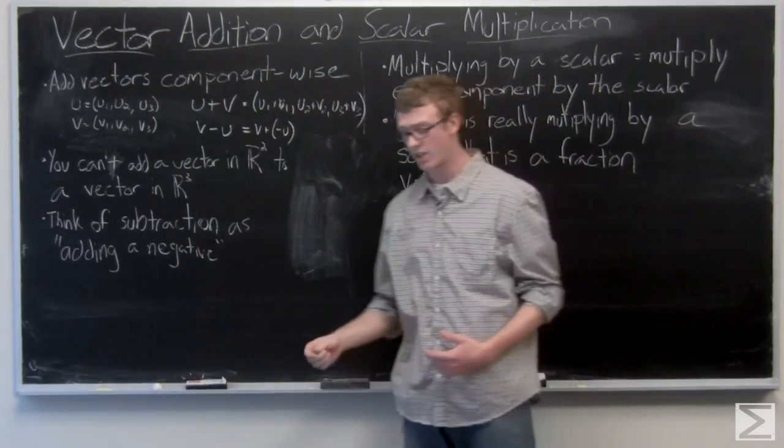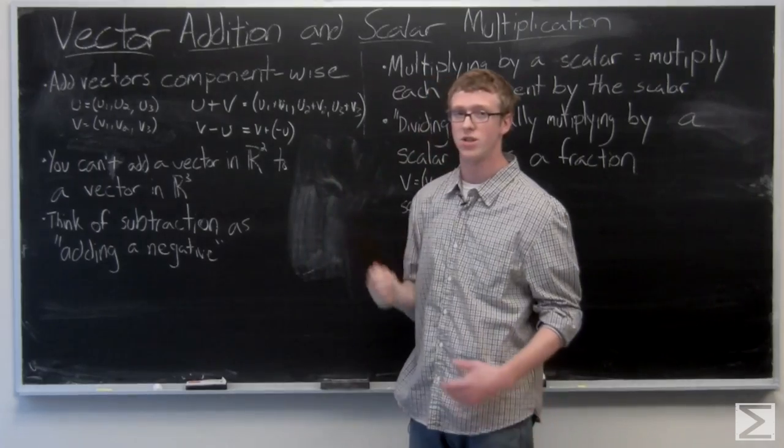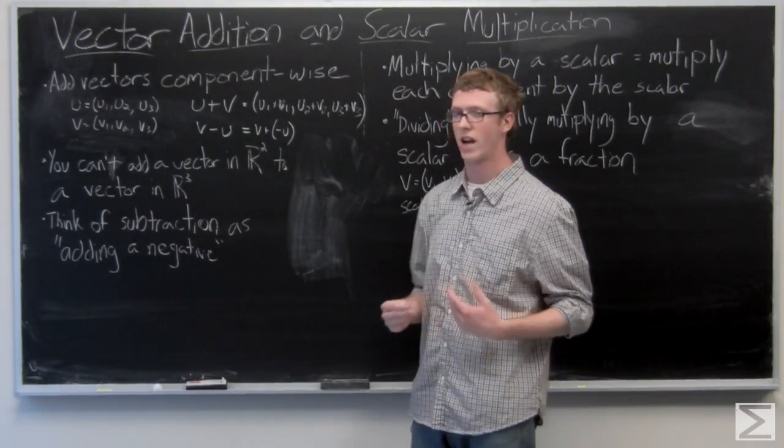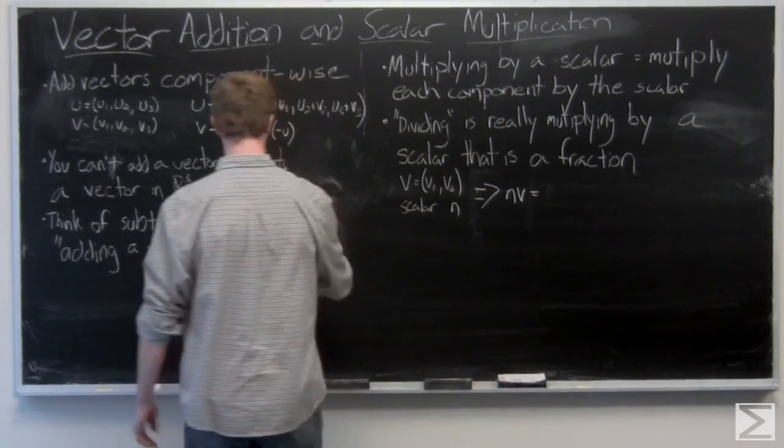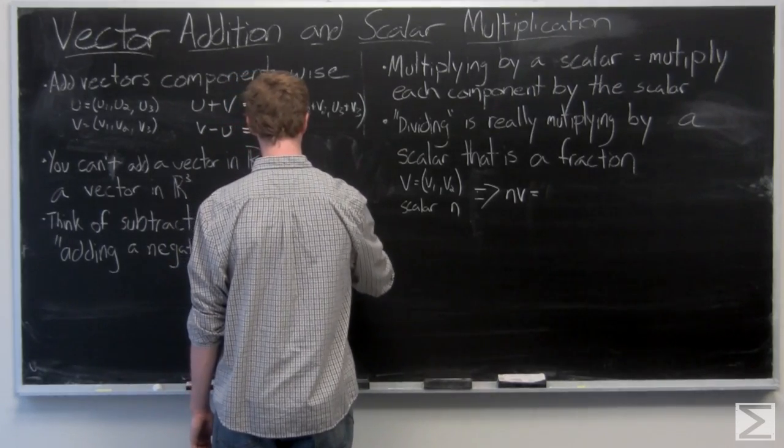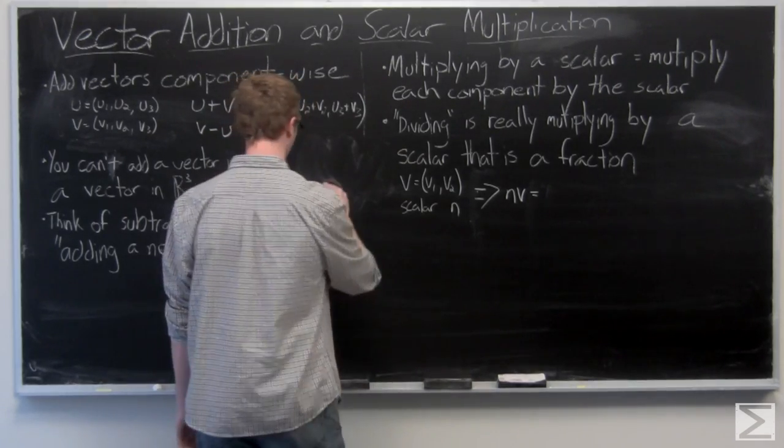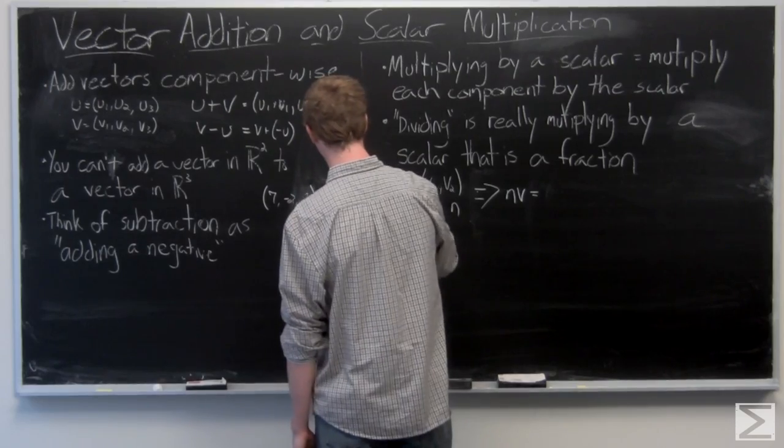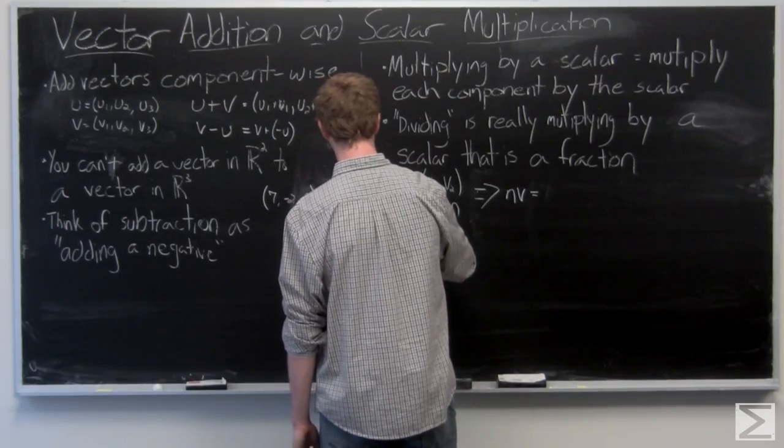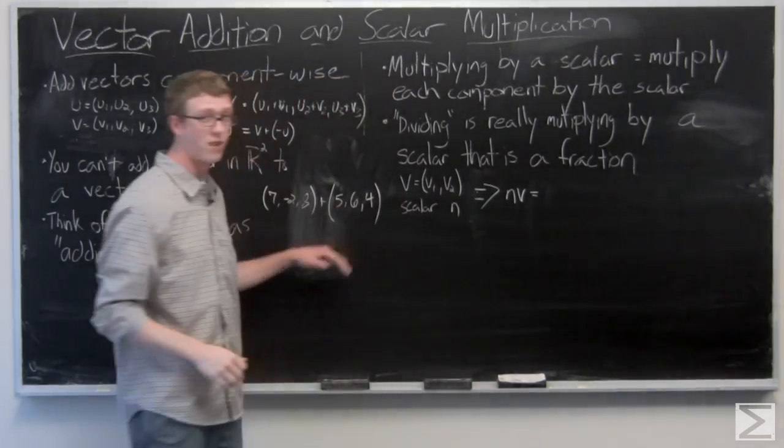We can take a quick look at some examples here just to show you guys what it's going to look like when you're actually using numbers. So we have two vectors in 3-space: 7, negative 2, 8, and 5, 6, 4.